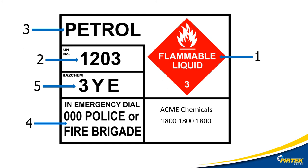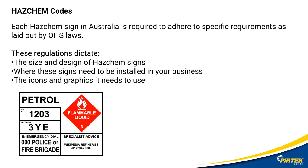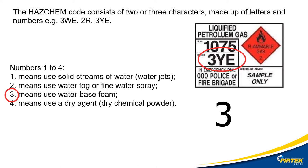The Hazchem code system provides advice on immediate action for the people transporting or handling dangerous goods. Hazchem codes must be displayed wherever such goods are located and also provide emergency services with immediate advice for incidents involving dangerous goods — like when the fire brigade is called. You'd specify the Hazchem code number off the placard if a petrol tanker was on fire, for example. The Hazchem code consists of two or three characters made up of letters and numbers — for example, 3WE, 2R, or 3YE in our example.